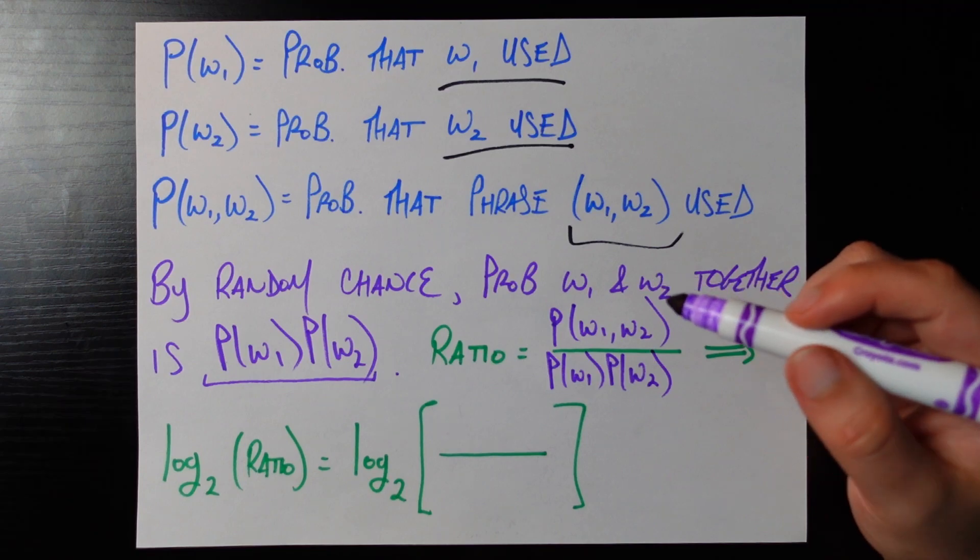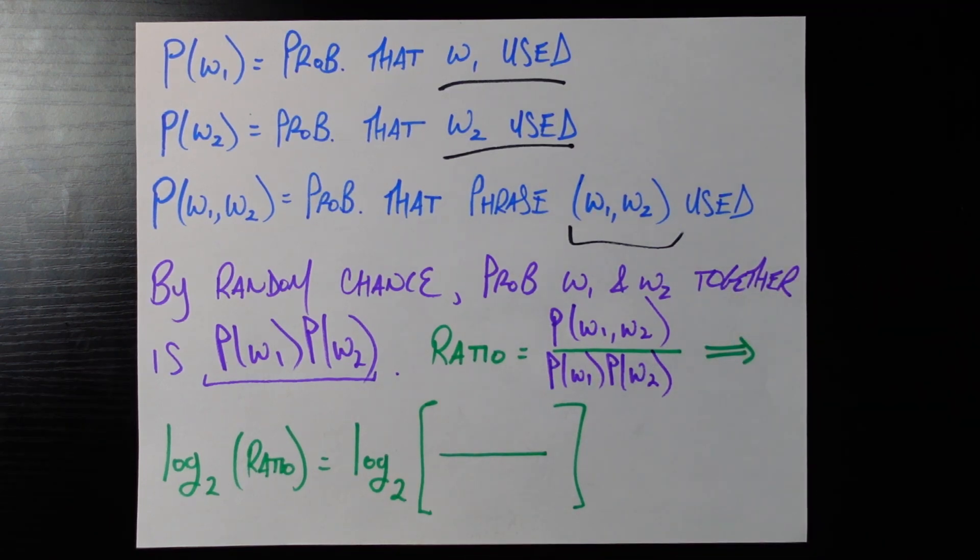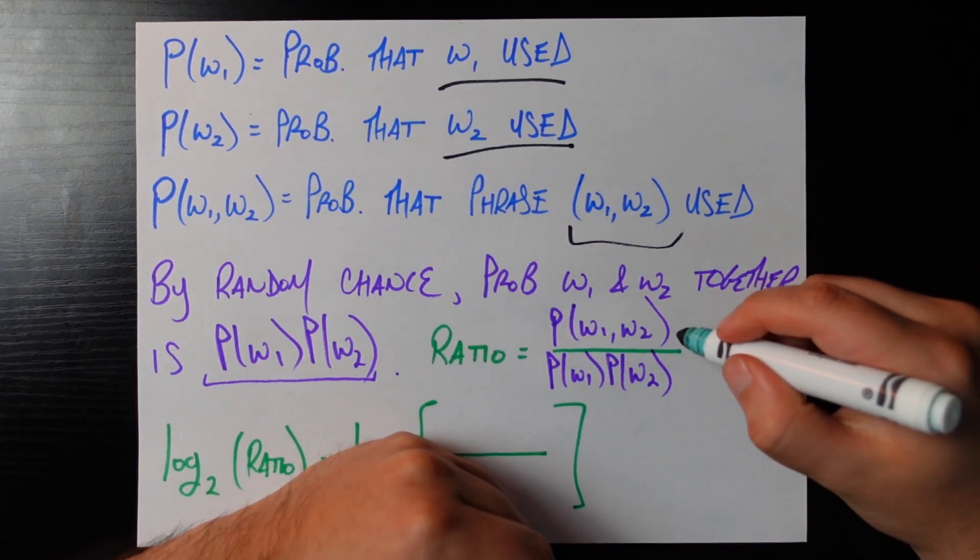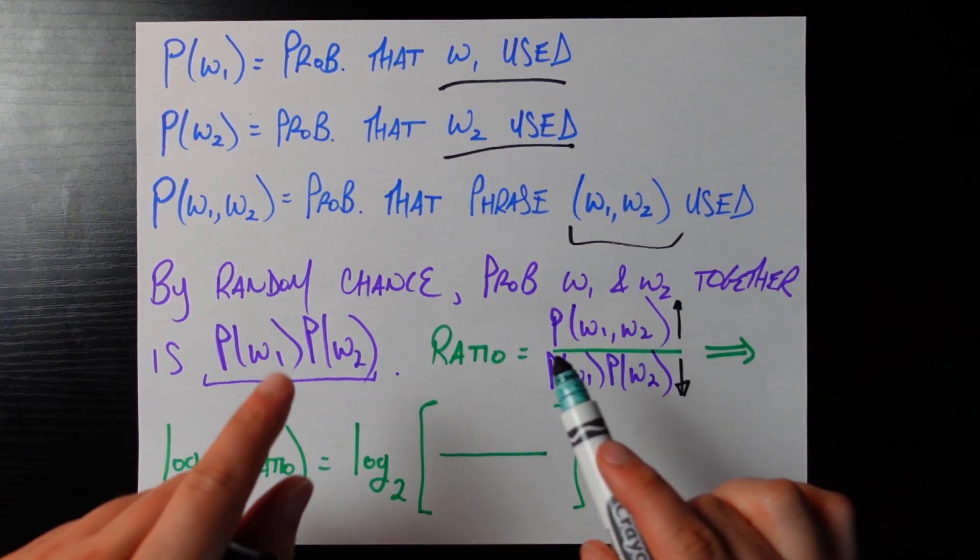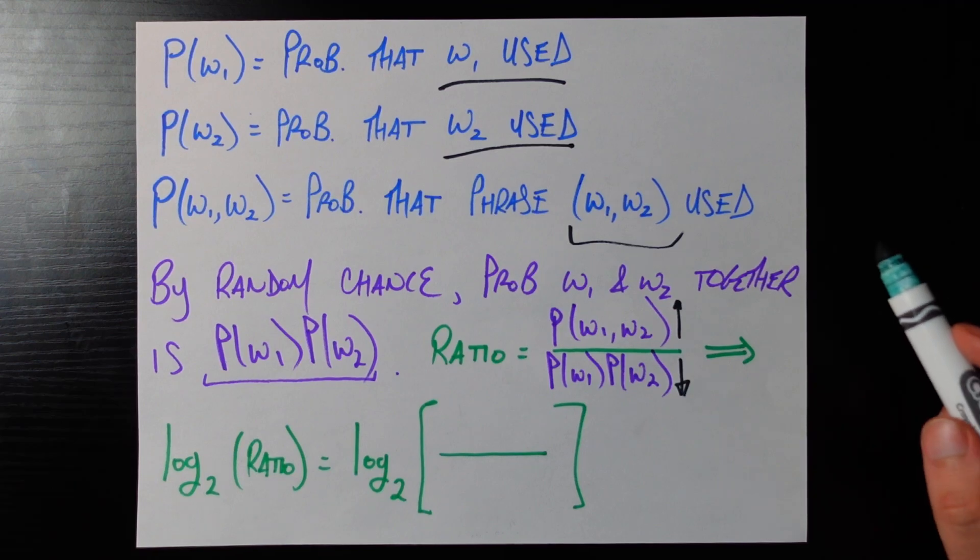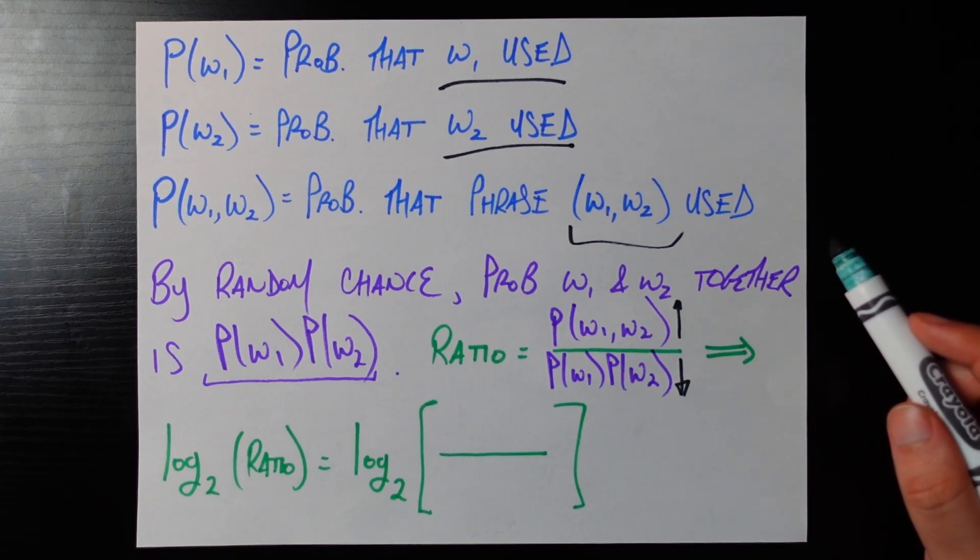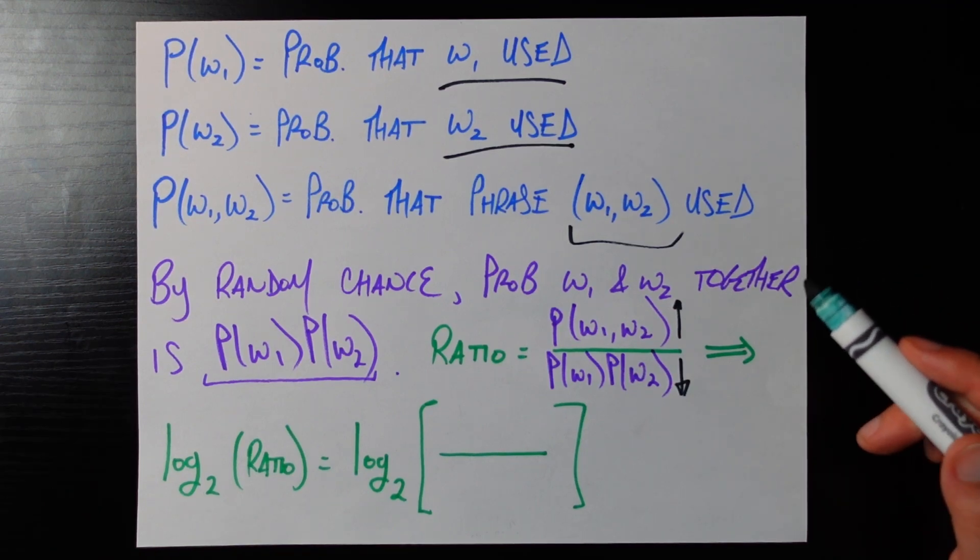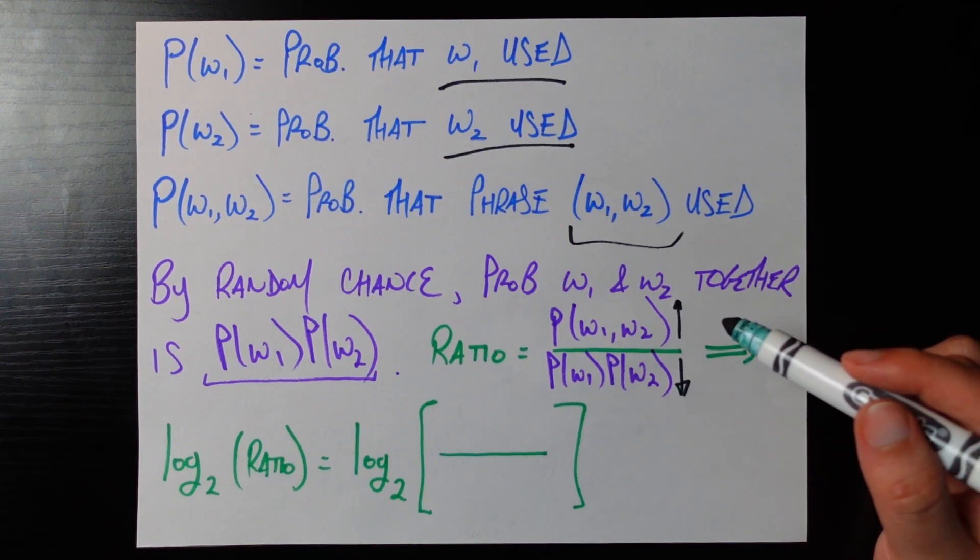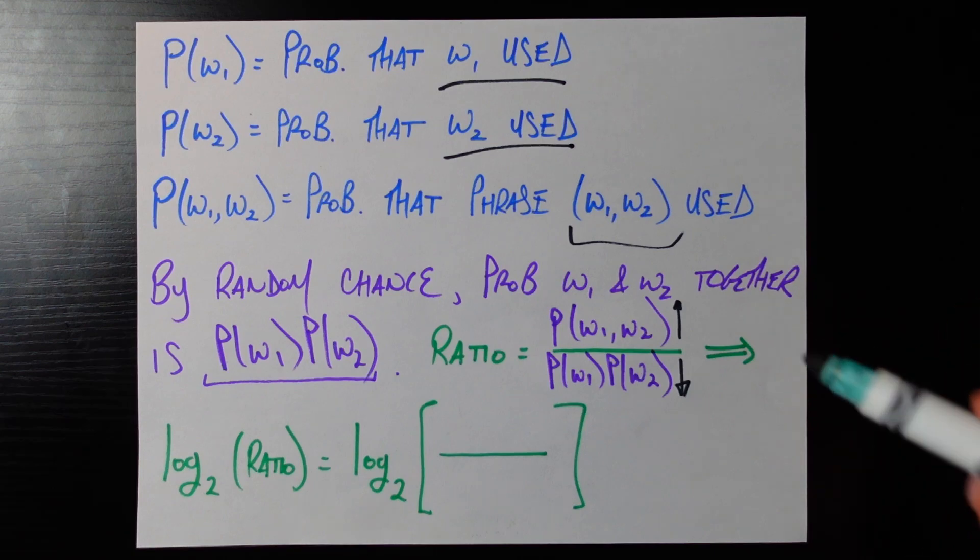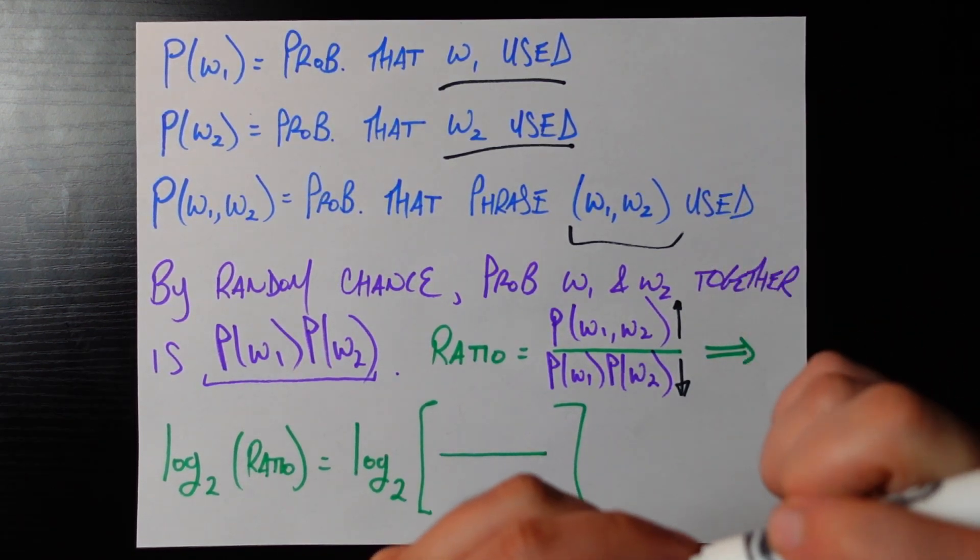If this ratio is very high then that would mean that the numerator is very high relative to the denominator. So this is saying the numerator the probability that the phrase w1 w2 is actually used in this giant piece of text that we observe is much much higher than we would expect if these two things were just appearing together by random chance. That makes them much much more likely that they're a phrase.